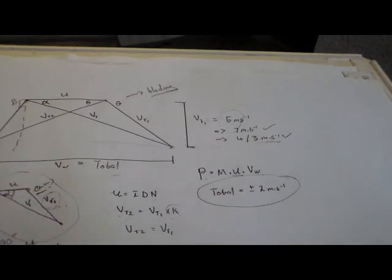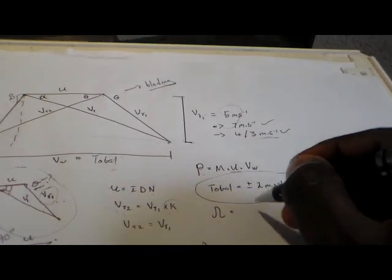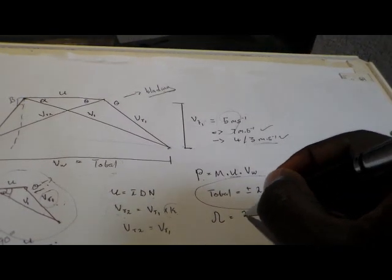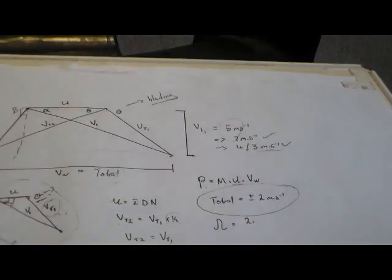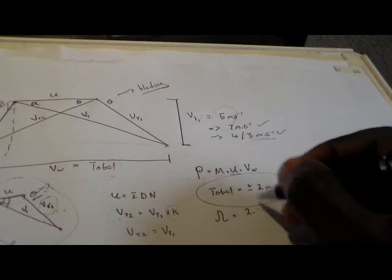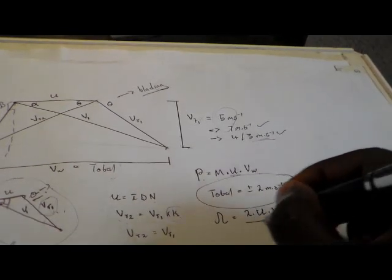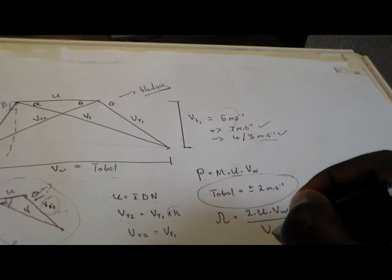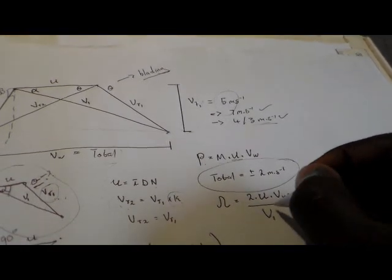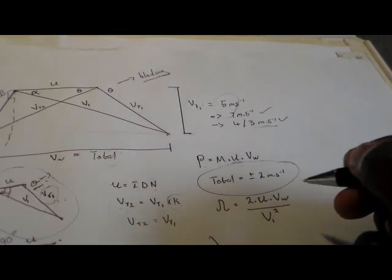When you calculate diagram efficiency, the formula is: diagram efficiency equals two multiplied by initial velocity u multiplied by total velocity Vw, divided by the inlet velocity V1 squared.